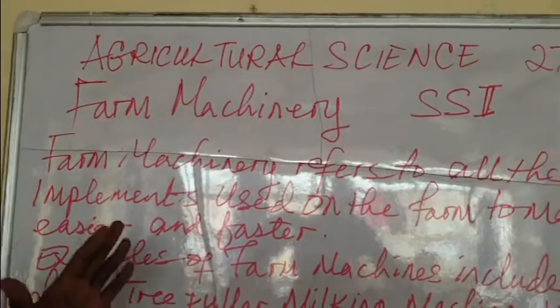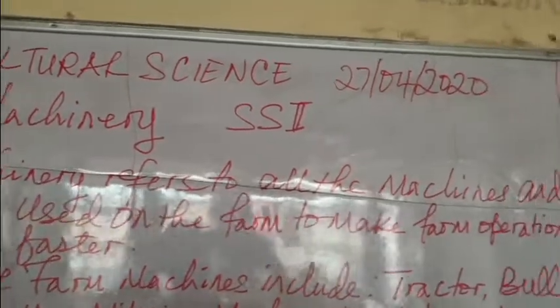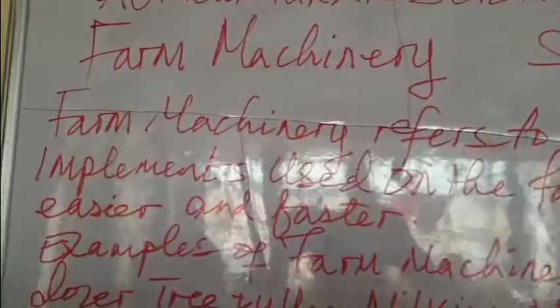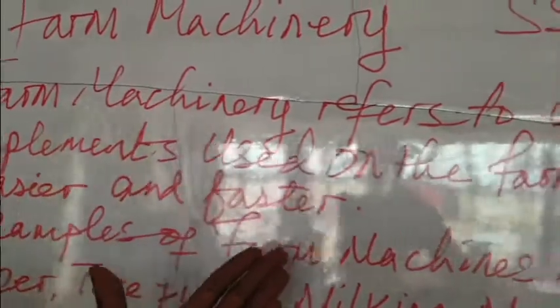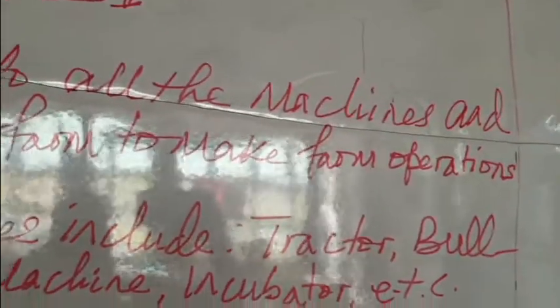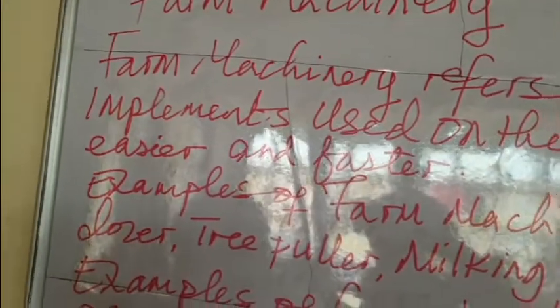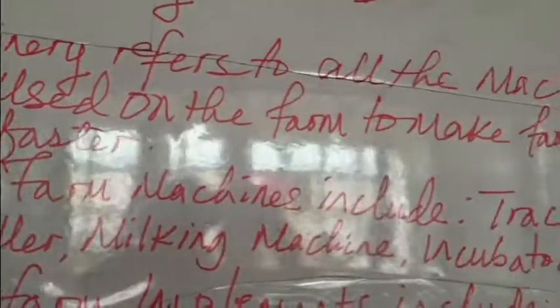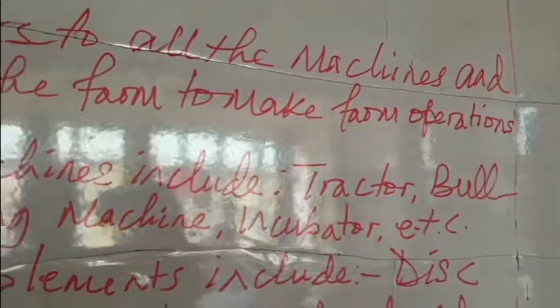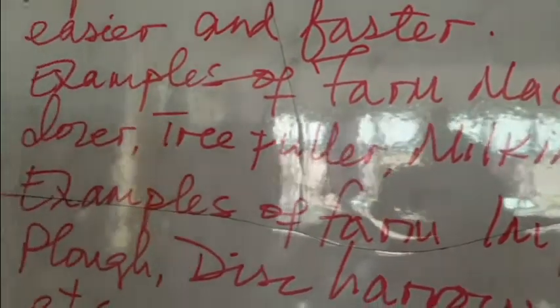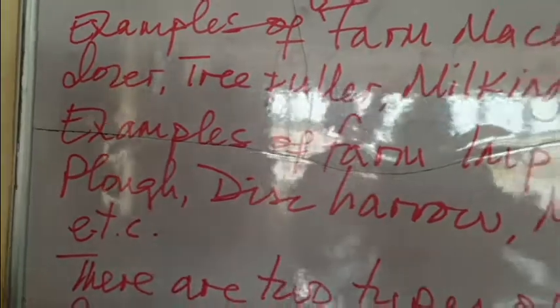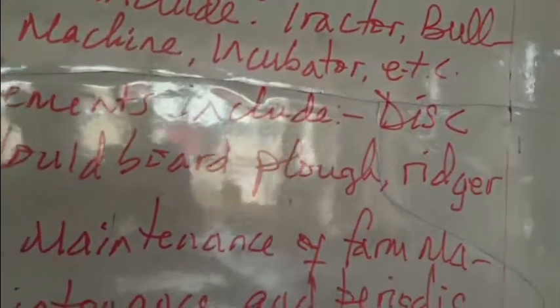In summary, farm machinery refers to all the machines and implements used on the farm to make farm operations easier and faster. Examples of farm machines include tractor, bulldozer, tree puller, milking machine, incubator, etc. Examples of farm implements include disc plow, disc harrow, mud board plow, ridger, etc. There are two types of maintenance of farm machines: daily maintenance and periodic maintenance.